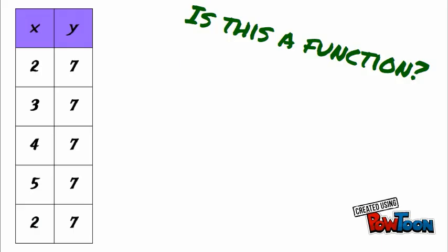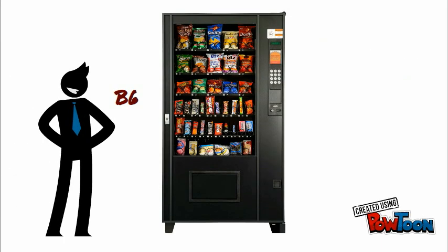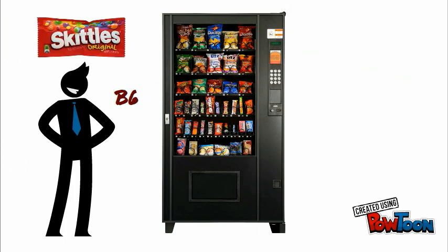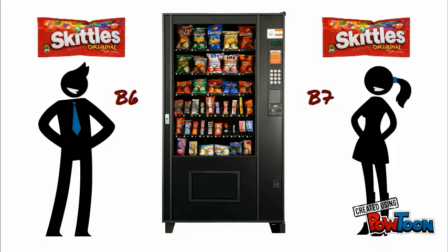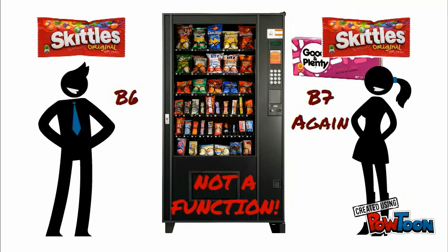If your friend pushes B6 and gets Skittles, and you push B7 and get Skittles, is it okay that the machine sells Skittles using two different buttons? Yeah, it's okay. What wouldn't be okay is if you push B6 or B7 again and got something besides Skittles. That would make this not a function.